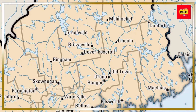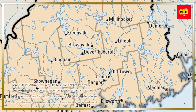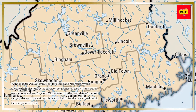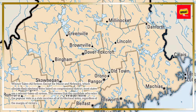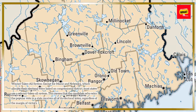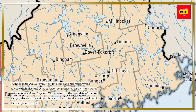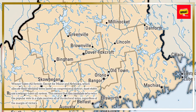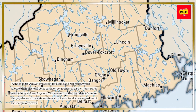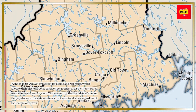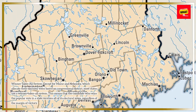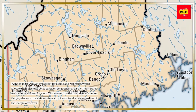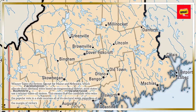Winner-Takes-All System. Except for Maine and Nebraska, which allocate their electoral votes based on congressional district, most states use a winner-takes-all system. This means that the candidate who wins the popular vote in a state receives all of its electoral votes, regardless of the margin of victory.